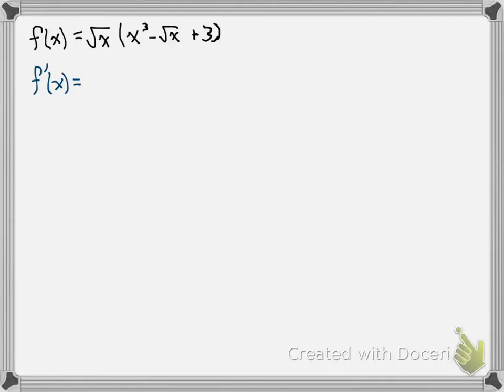Given the function f of x equals square root of x times the quantity x cubed minus square root of x plus 3, we want to find f prime of x.